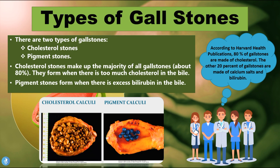There are two main types of gallstones. The first are cholesterol stones and the second are pigment stones. Cholesterol stones make up the majority — about 80 percent of all gallstones — and they form when there's too much cholesterol in the bile. Pigment stones form when there's excess bilirubin in the bile. According to Harvard Health Publications, 80 percent of gallstones are cholesterol-based; the other 20 percent are made up of calcium salts and bilirubin. Cholesterol calculi are usually white-yellowish hardened deposits, while pigment calculi are made up of bilirubin and calcium salts and usually stain dark.